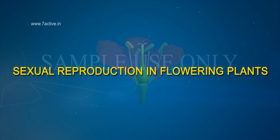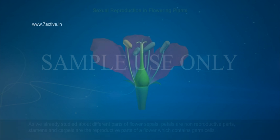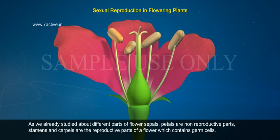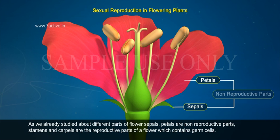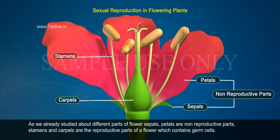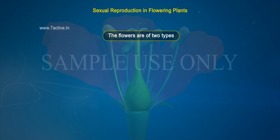Sexual Reproduction in Flowering Plants. As we already studied about different parts of a flower, sepals and petals are non-reproductive parts, while stamens and carpels are the reproductive parts of a flower which contain germ cells. The flowers are of two types.